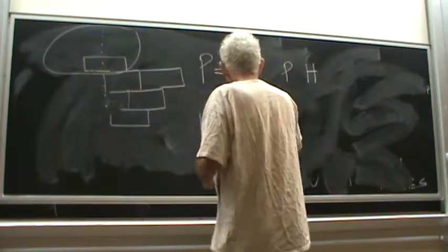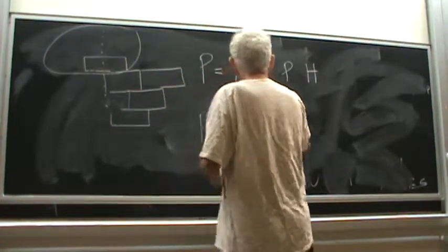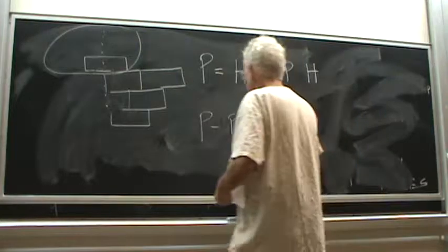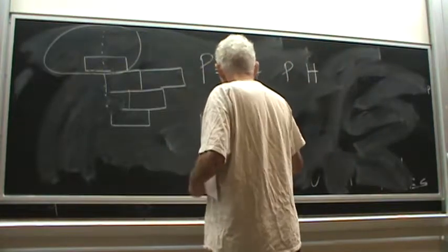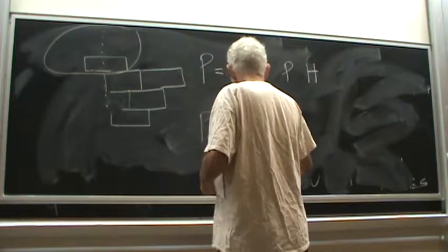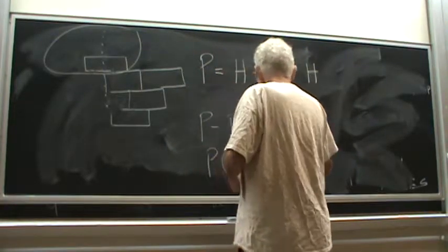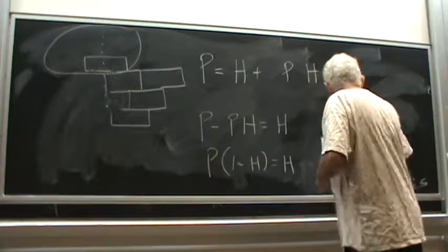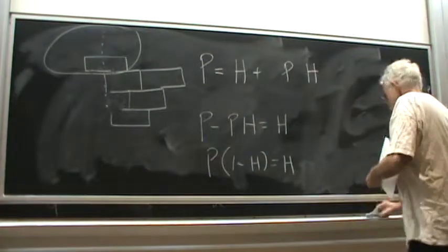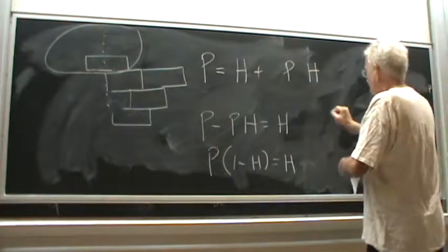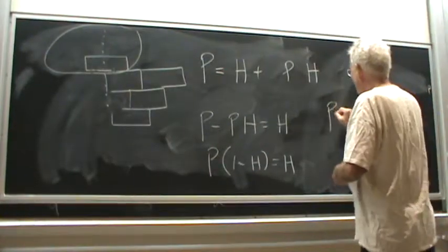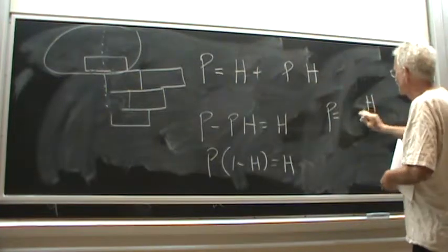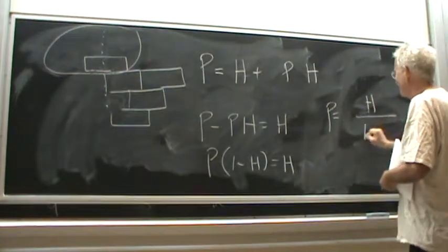P minus ph equals h. P times y minus h equals h. And solving for p, we get p equals h divided by y minus h.